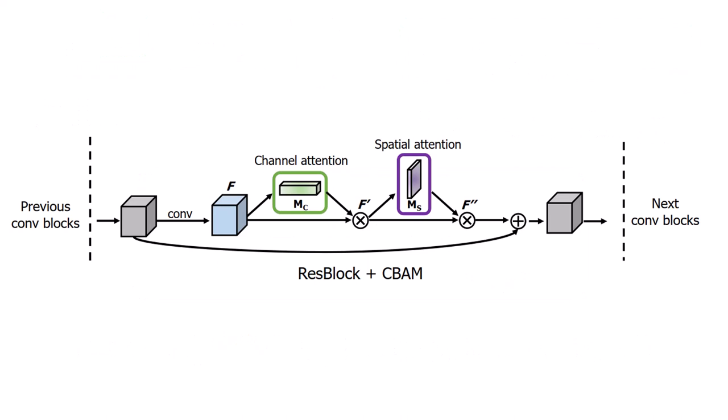And for integrating it with ResNet, we do not have anything fancy, it is exactly like what we had in squeeze and excitation. So we have an input feature volume, followed by a convolution layer, that makes our input feature F, then we pass it through a channel attention, followed by spatial attention, and the skip connection. And we have our output feature volume for the next conv blocks.